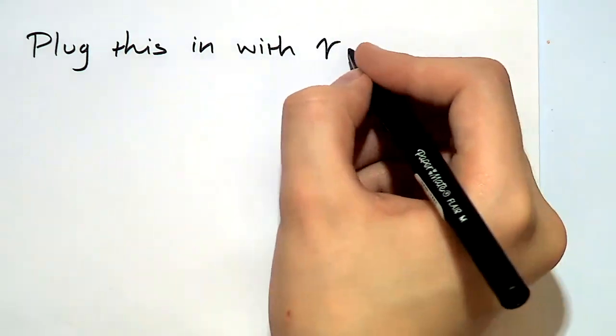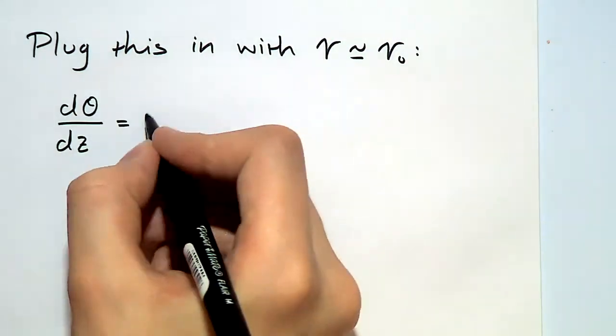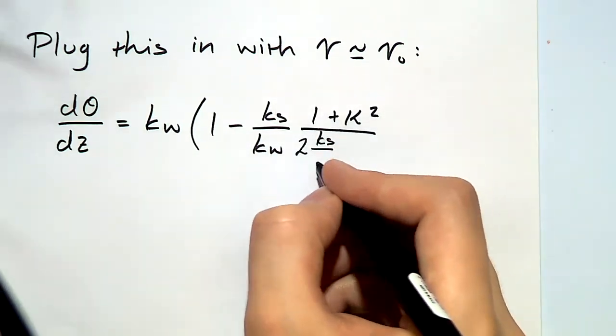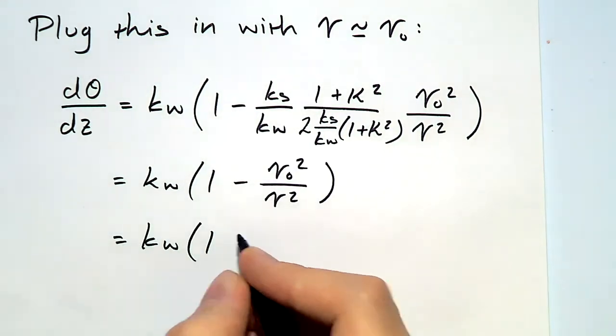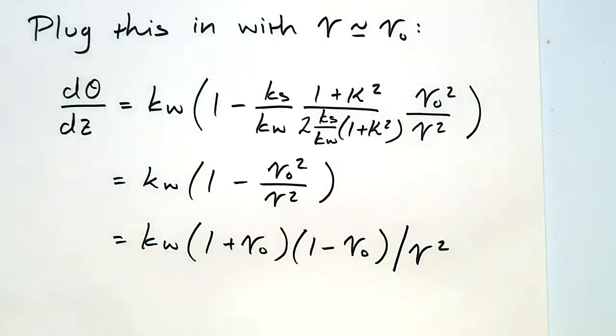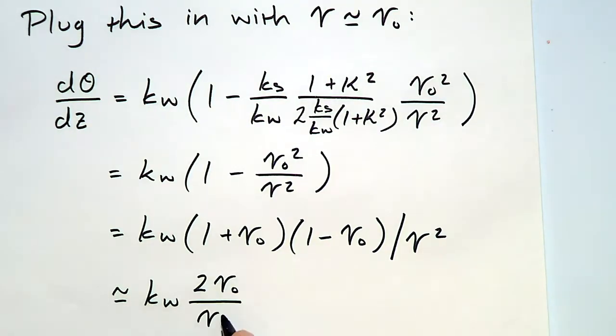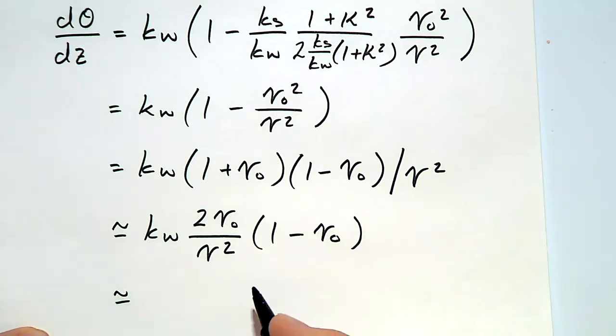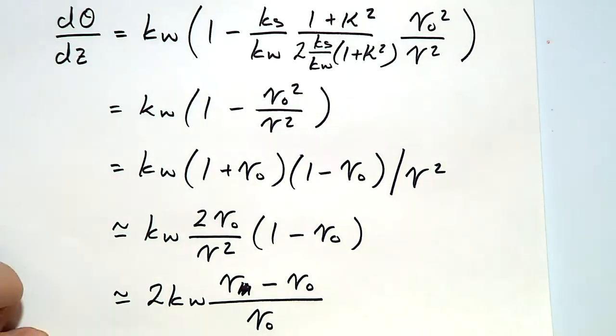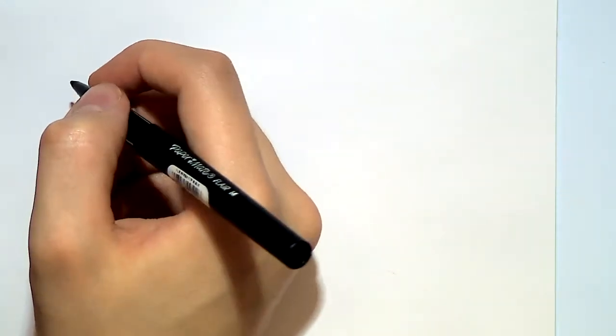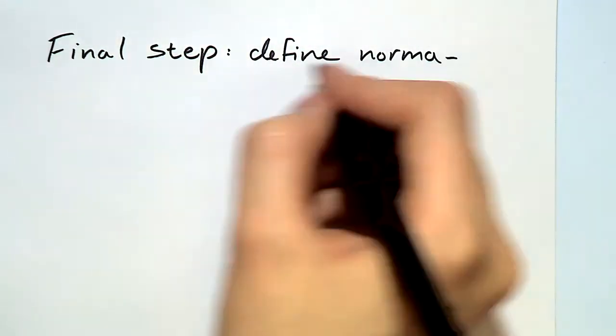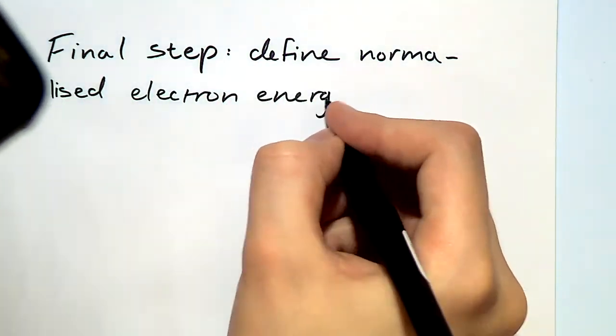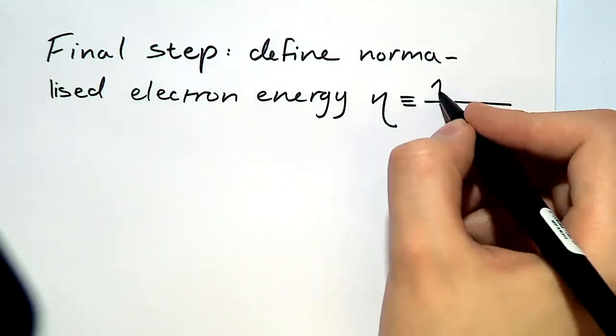Plugging the expression for the resonance energy, γ₀, into the expression for the change of the ponderomotive phase, and doing a linear approximation, so assuming that we're close to resonance, we can now express the change in the ponderomotive phase in terms of a relative distance away from resonance. So that dθ/dz is just simply proportional to the relative energy away from resonance. And the final step now is to write down the equations of motion of the electrons in terms of this relative or normalized energy, η.